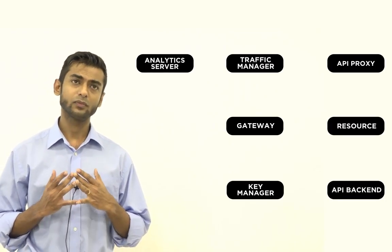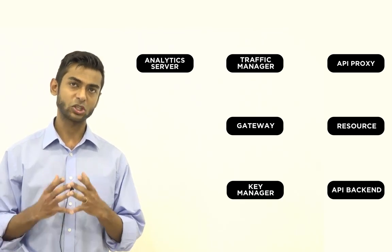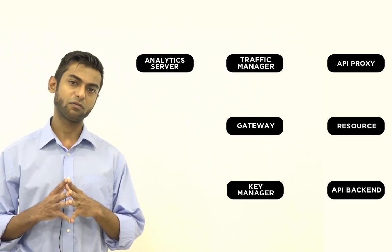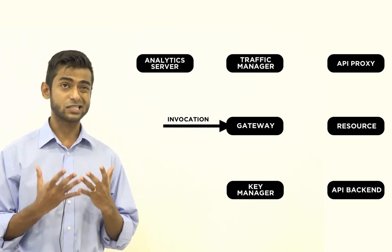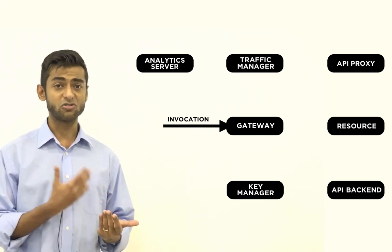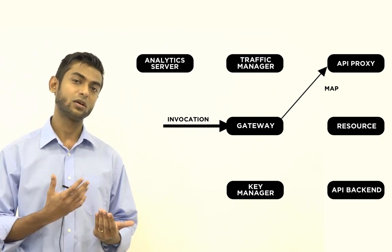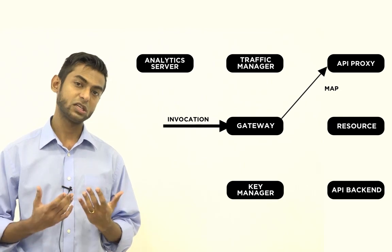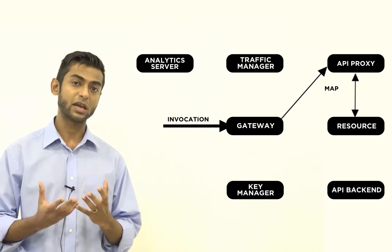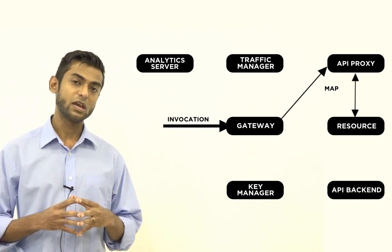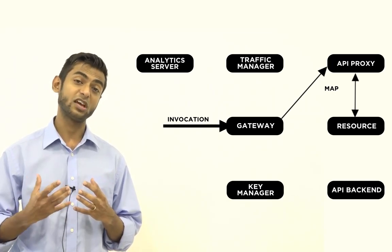So if we take a closer look at how the API Gateway functions from the point of an API invocation, the first thing that the API Gateway does is it will intercept the actual API invocation that it receives and it will try to map that invocation with API proxy and resource that is already running on that API Gateway. So the API Gateway is able to find a matching API proxy and resource.